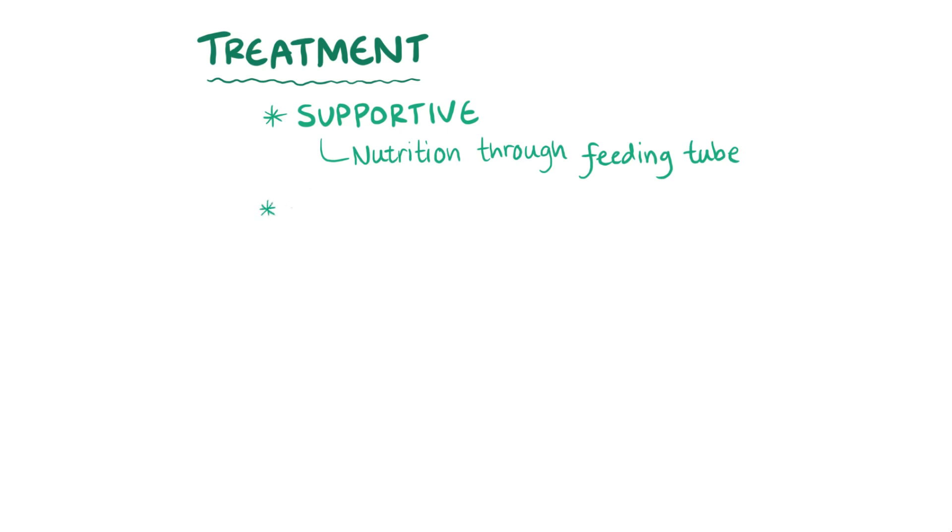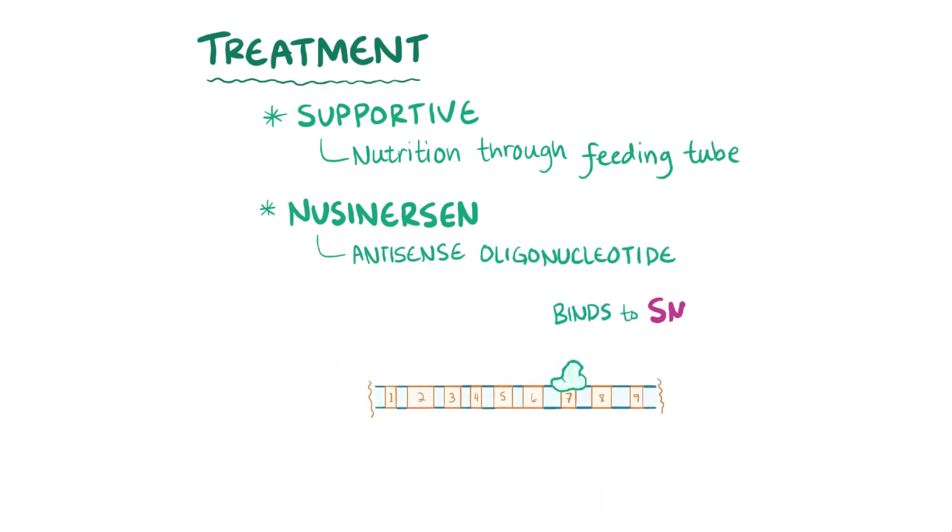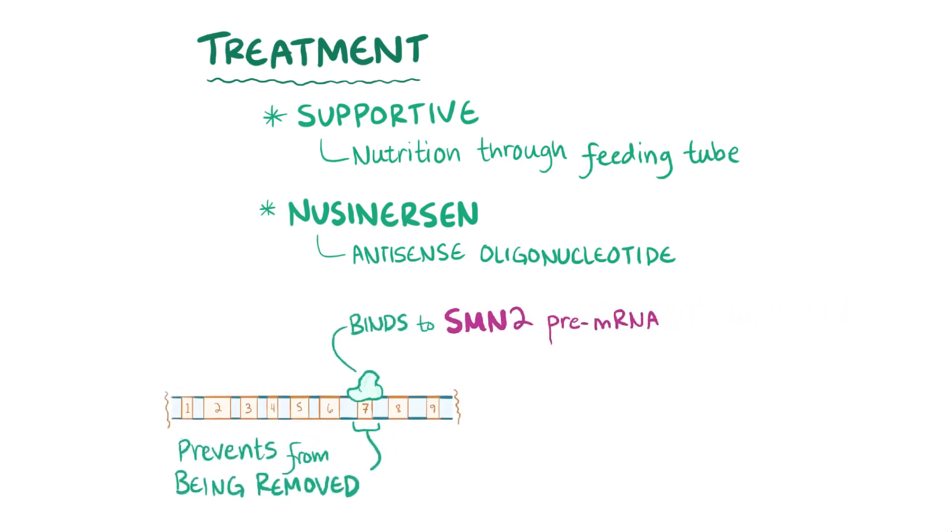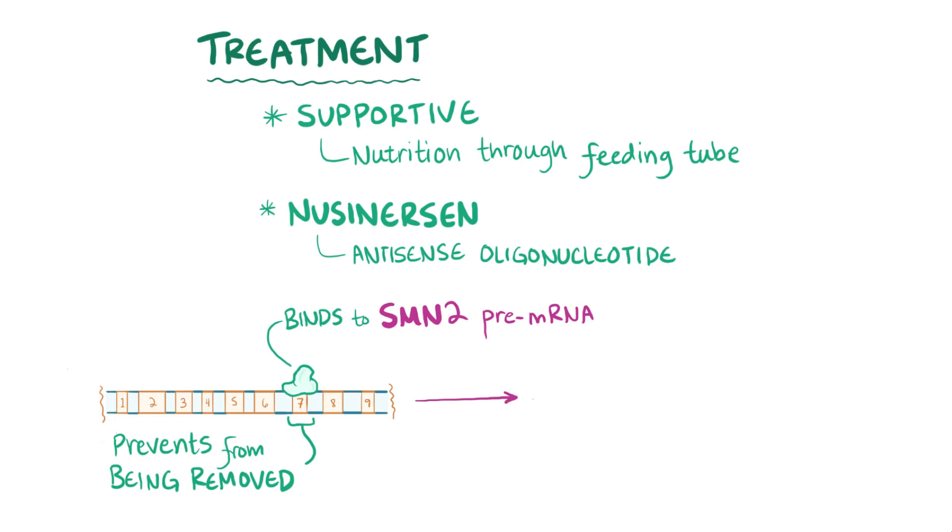A relatively new therapy for SMA is called nusinersen. Nusinersen is an antisense oligonucleotide that binds to the SMN2 pre-mRNA and prevents exon 7 from being removed, which allows the SMN2 mRNA to get expressed, ultimately making a more normal amount of SMN protein.